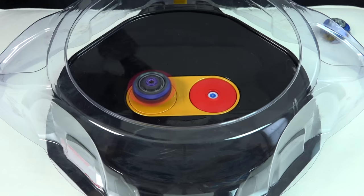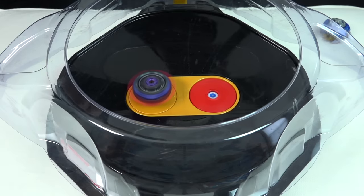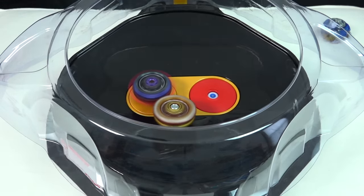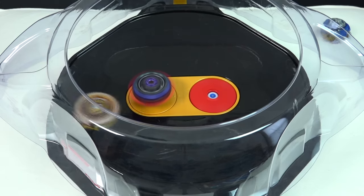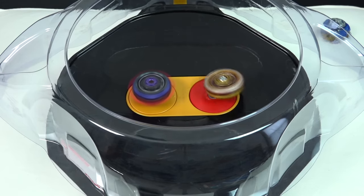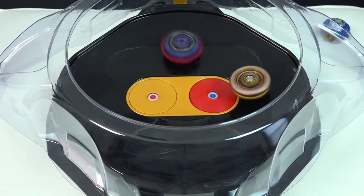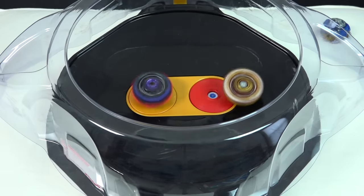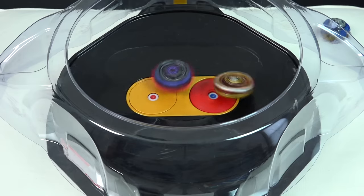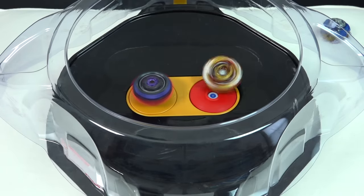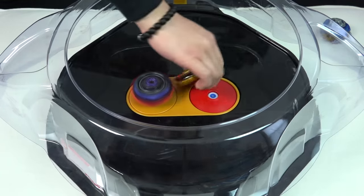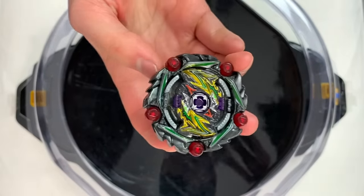Alright, next opponent is World Spriggan. Three, two, one, go shoot! Three, two, one, go shoot! Oh, different strategy - attack it constantly. Yes, the plate's helping. Oh oh oh, come on Spriggan, you can do it. Oh, so close.